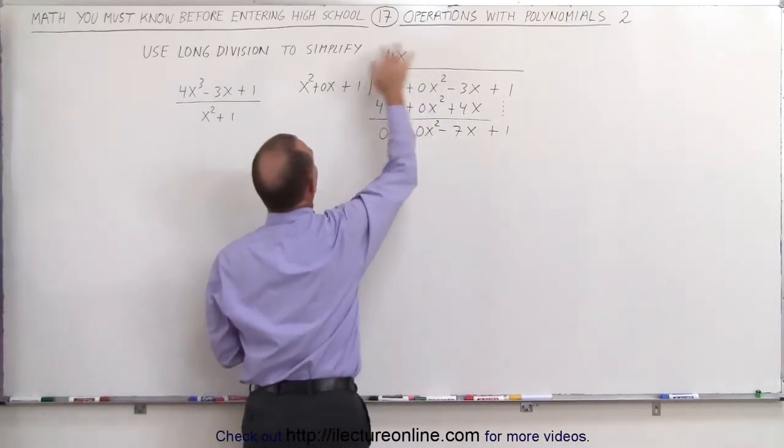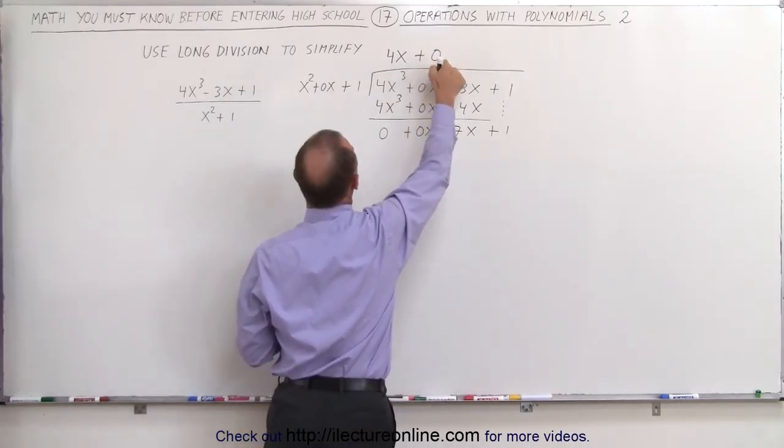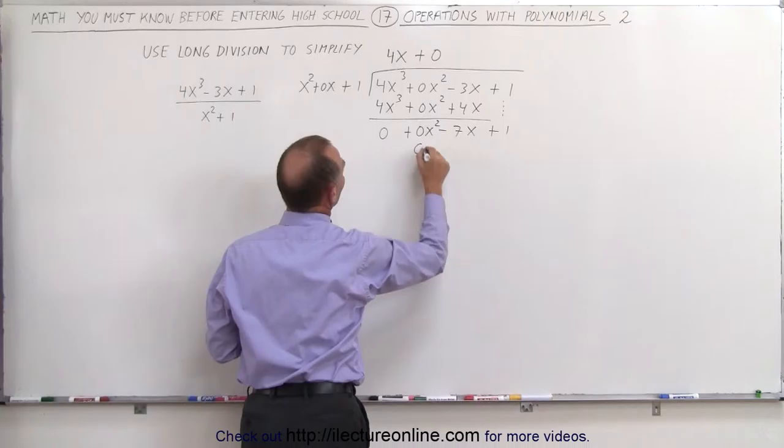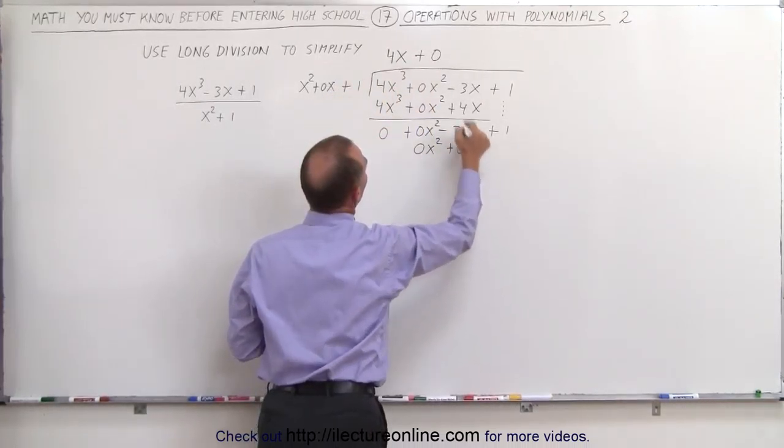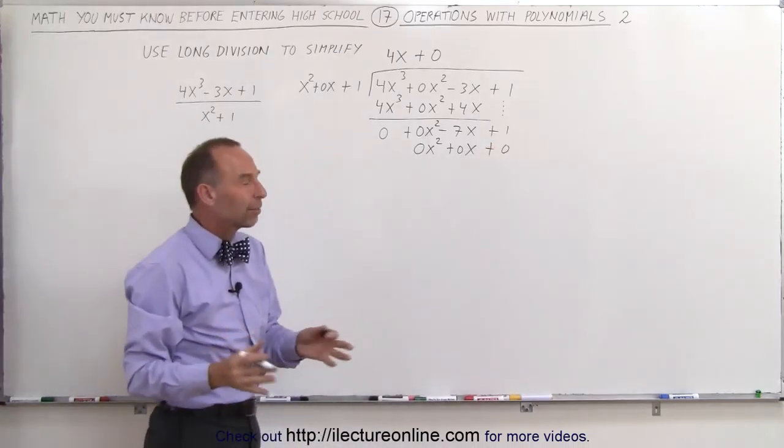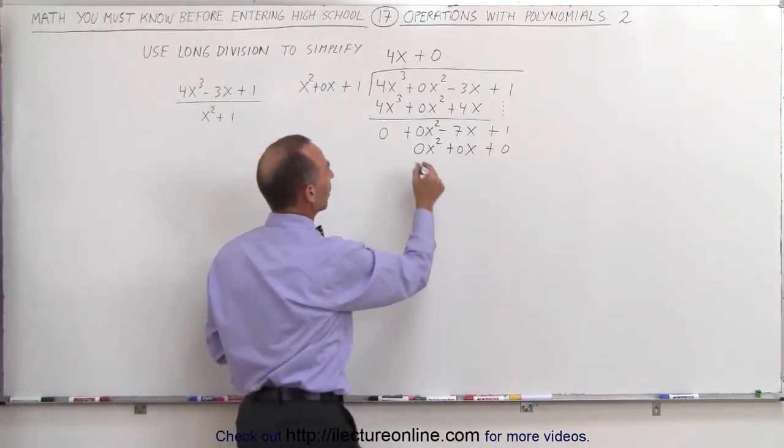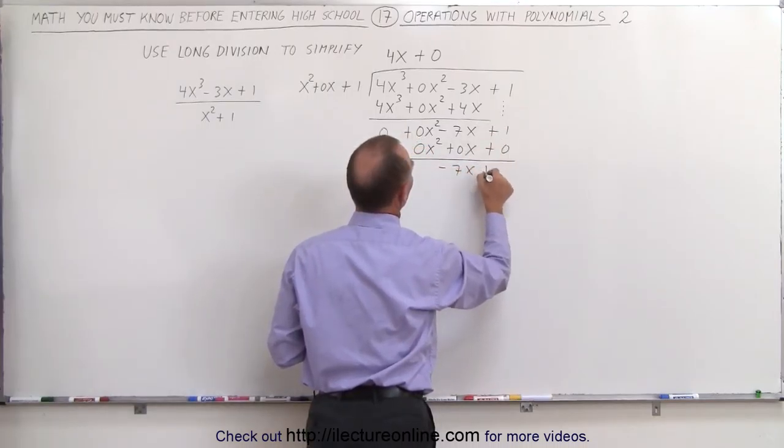What number times this gives us 0x²? And of course the answer would be plus 0, because 0 times this will give us 0x², this times this gives us plus 0x, and this times this gives us plus 0. We really didn't have to do that, but just to see how that will work, subtracting this from that, we'll get minus 7x plus 1.